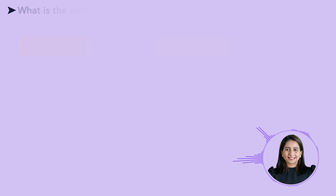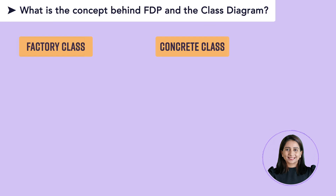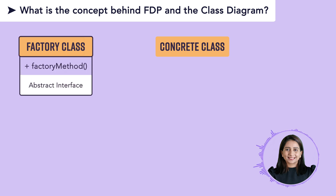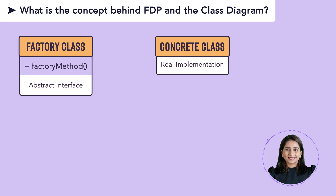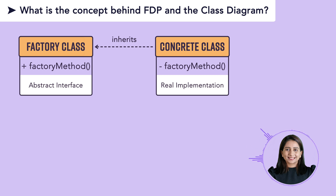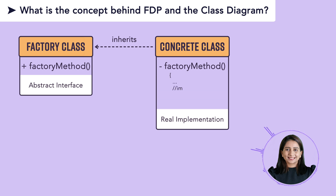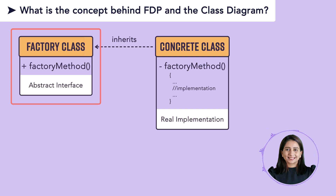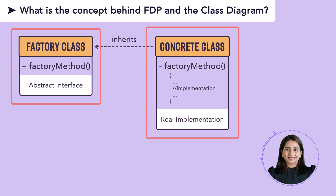Let's move on to see the class diagram. You can see there is a factory class which will be the abstract interface. It will have a method called factory method — this is a convention used while implementing factory method pattern. Then there will be a concrete class which will be a subclass of factory class, inheriting from it. It will implement the function defined in this interface, and this is the function which the concrete class is actually going to implement. So this particular class is the abstract interface and the other is the actual implementation.